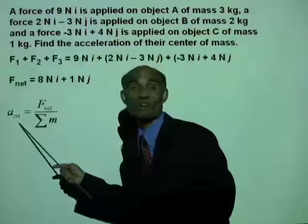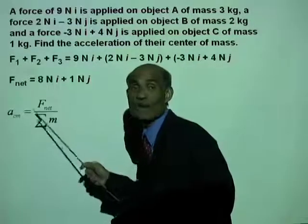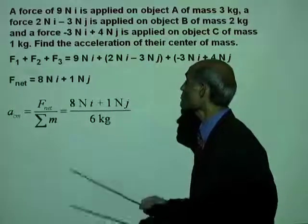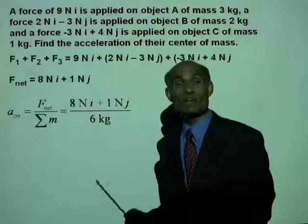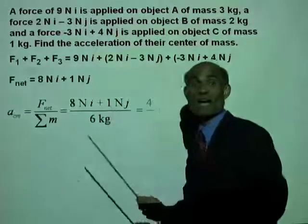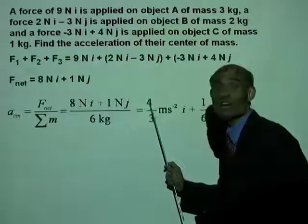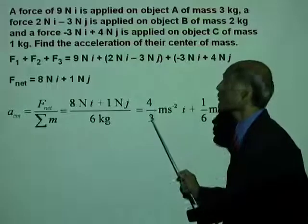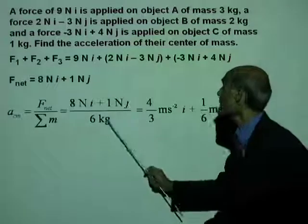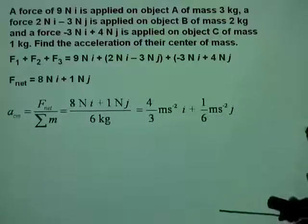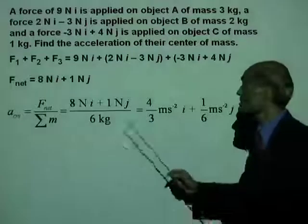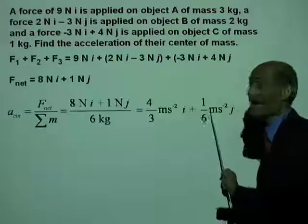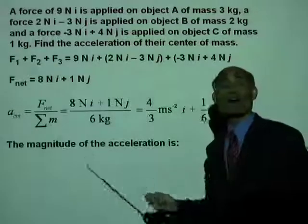Therefore, the acceleration of the center of mass is the net force divided by the sum of the masses. That is 8N·i plus 1N·j divided by 6 kg. This acceleration has an X component and a Y component. The acceleration along the X direction is 4/3 m/s² i, and the Y component is 1/6 m/s² j. So the acceleration of these three objects consists of an X component and a Y component.